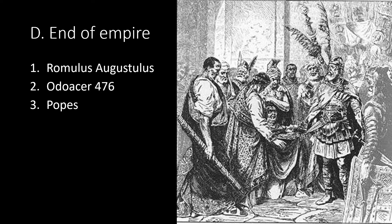End of the empire: Romulus Augustulus, a 14-year-old boy, became the last emperor of the western part of the Roman Empire. It's easy to remember because just as Rome was founded by a Romulus, it ends with a Romulus. Odacer in 476, a barbarian general, sent Romulus Augustulus into exile. With no central power in Rome, this power shift would move from being political to religious — from an emperor to a pope.